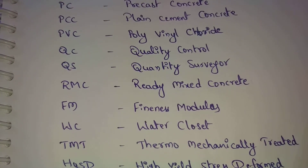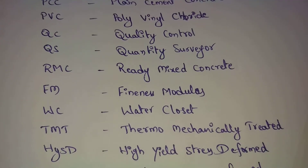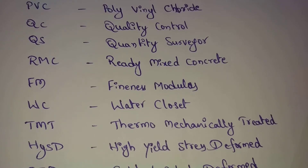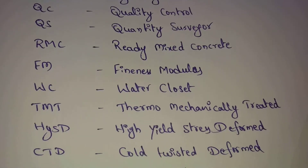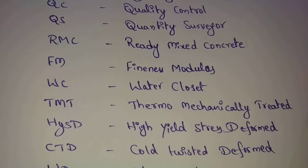Next, TMT — TMT means thermo-mechanically treated. TMT bars means thermo-mechanically treated bars. Compared to TMT bars, ordinary steel bars can also be used. Next, HYSD bars — HYSD means high yield strength deformed bars. Examples include Fe-415 and Fe-550. Next, CTD — CTD means cold twisted deformed bars. These bars are also strong compared to ordinary steel.